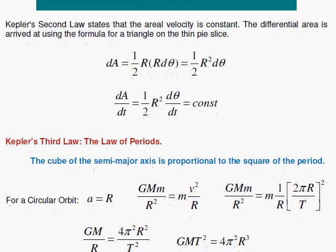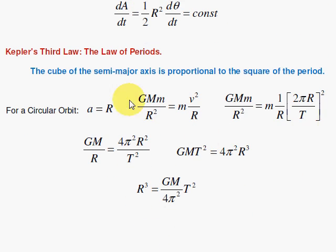The third law, Kepler's third law, the law of periods. The cube of the semi-major axis is proportional to the square of the period. I'm going to show you how this works for a circle. Nice simple calculation. For a circle, the semi-major axis equals the semi-minor axis, a equals b equals R.